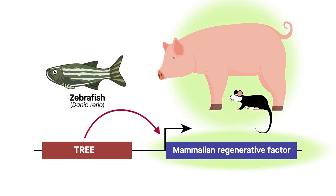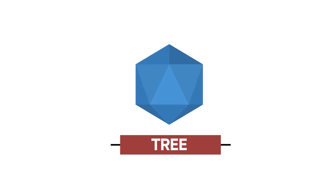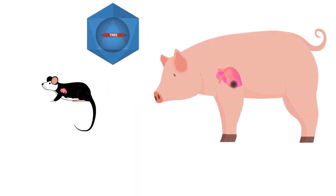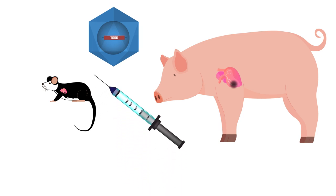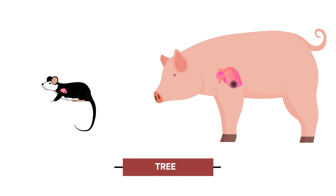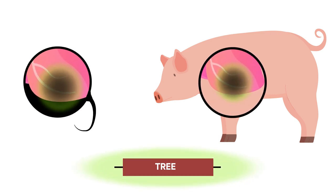In the new study, researchers tested the injury-targeting and tissue-restoring ability of gene therapy vectors containing zebrafish TREEs in mice and pigs. In both species, zebrafish TREEs carried by adeno-associated viruses delivered into the bloodstream were able to turn on genes specifically in injured heart tissues and not in uninjured heart muscle, regardless of whether the vectors were introduced before or after myocardial infarction.